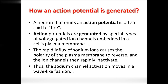Neurons that emit an action potential are said to fire. Action potentials are generated by special voltage-gated ion channels embedded in the cell plasma membrane. These include voltage-gated sodium channels, potassium channels, and calcium channels.